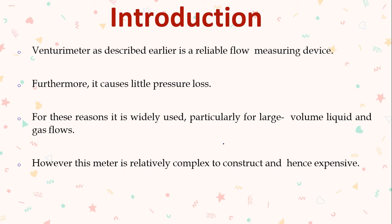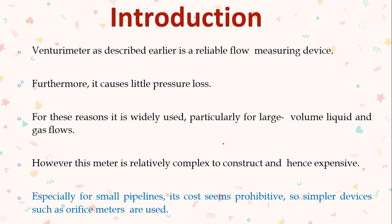Keeping all the disadvantages of the venturi meter in view, we can adopt an orifice meter. One more advantage of the orifice meter is the space it takes — since the venturi meter contains three components (convergent, divergent, and throat), it requires more area in a pipe, whereas the orifice meter requires less area. So wherever a venturi meter cannot be fixed, you can use an orifice meter. It is especially useful for small pipelines with less discharge.